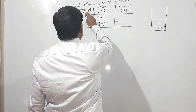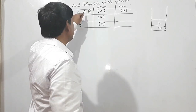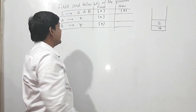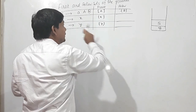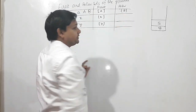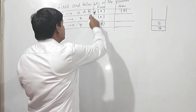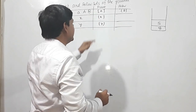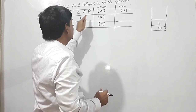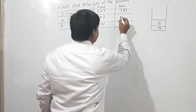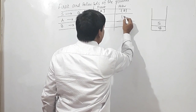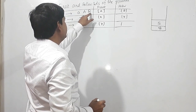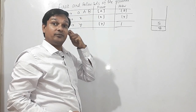Now I have to check Follow of A. Follow of A — I need to write terminals only. A is followed by B in the production S→AAB. B's First is Y, so B can be replaced by Y. Therefore, Follow of A will be {Y}.